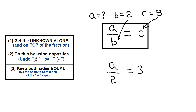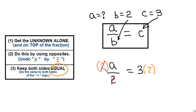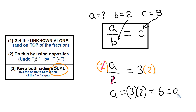I am solving for a. Is a alone? No — there's a 2 over here, so we have to get rid of the 2. Right now we're dividing by 2, so the opposite of divide by 2 is multiply by 2. We're multiplying by 2 and dividing by 2 — that's going to reduce the 2. To keep them equal, I multiply both sides by 2. Multiplying and dividing by 2 reduce to 1 and they're gone. Rewriting: a equals 3 times 2. So a equals 6.